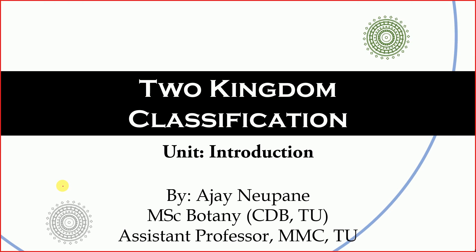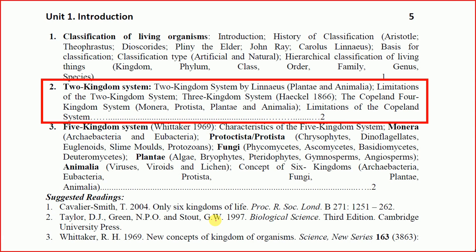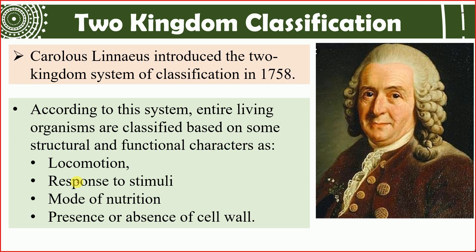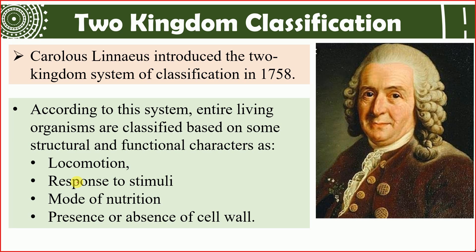We were discussing the two kingdom classification system in our last class. The two kingdom classification system was given by Linnaeus. Aristotle had also divided living organisms into plant and animal kingdoms, but Linnaeus categorized all living organisms into two groups based on specific characters: locomotion, response to stimuli, mode of nutrition, and presence or absence of cell wall.